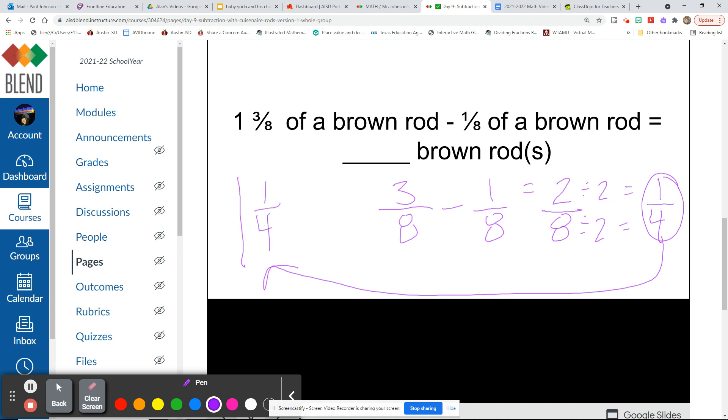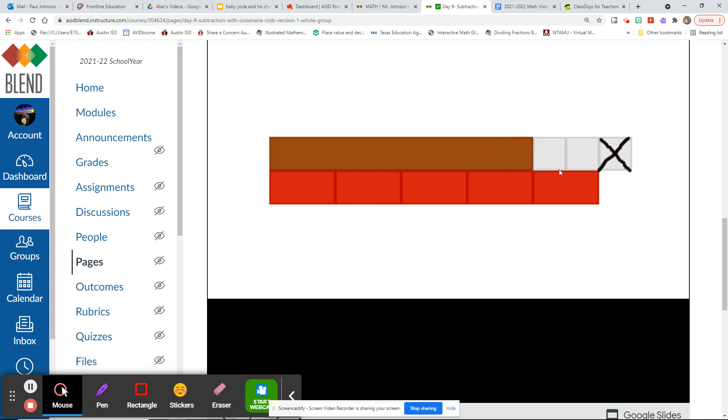If we take one and three-eighths of a brown rod and take away one-eighth of a brown rod, we should have one and one-fourth of a brown rod left, or one and two-eighths, but we're better than that. We know it's one and one-fourth, right? Alright, so let's clear the screen and take a look at that in a picture.